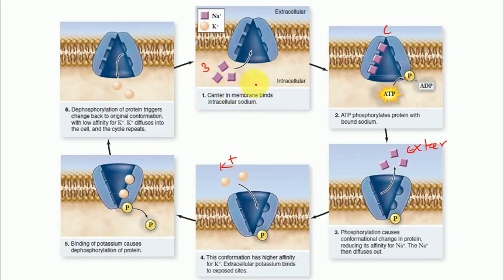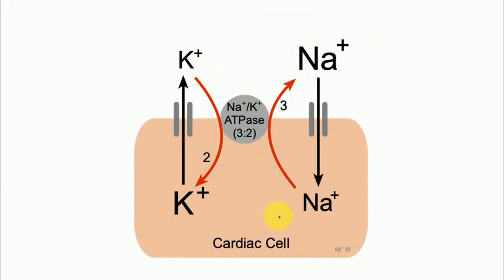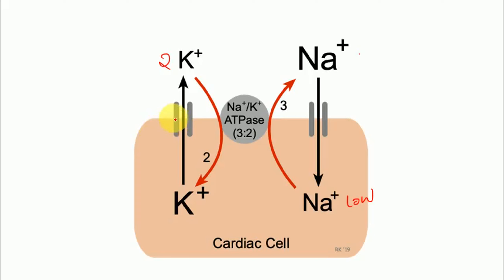In the sodium potassium pump, three Na+ molecules move outside and two K+ molecules move into the cell in each cycle. This is what happens in cells which have the sodium potassium pump — for example cardiac cells. One third of all the ATP expended by an animal is used in the active transport of Na+ and K+ ions. So in every cycle, three Na+ leave the cell and two K+ enter the cell.